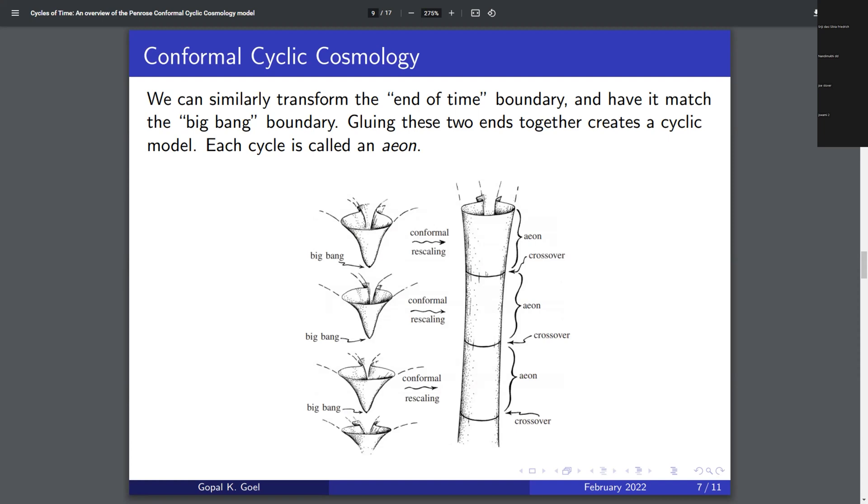and construct a cyclic model in this way where the end of time for one universe, because at that point all that's left is massless particles, acts as the Big Bang stage for another universe. And that way you have a sequence of universes connected in this way. And this is essentially what Penrose's cyclic model is saying.